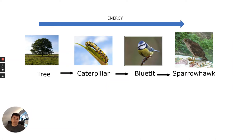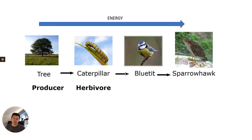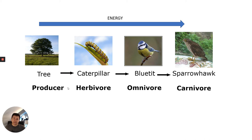Here we have a four-level food chain, and energy is moving through it. The first thing is the producer — in this case the tree. The caterpillar eats the leaves of the tree and is known as a herbivore. The blue tit eats the caterpillar and is known as an omnivore because blue tits also eat seeds. Then the sparrowhawk is a carnivore. There are different levels in this food chain.